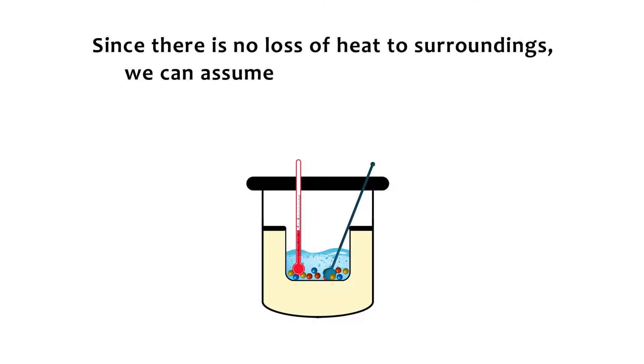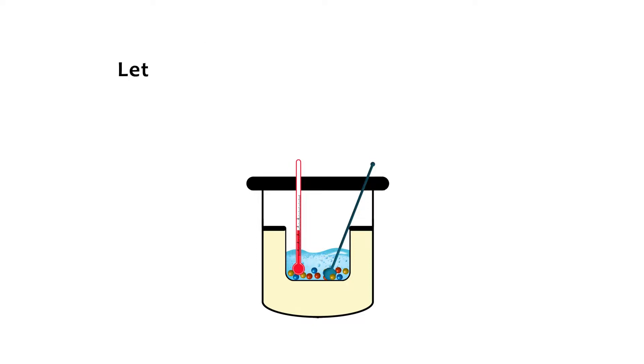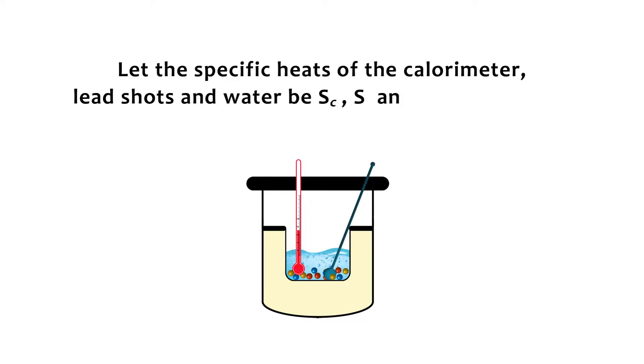Since there is no loss of heat to the surroundings, we can assume that the entire heat lost by the solid is transferred to the calorimeter and water to reach the final temperature. Let the specific heats of the calorimeter, lead shots, and water be SC, SL, and SW respectively.